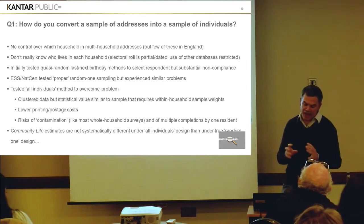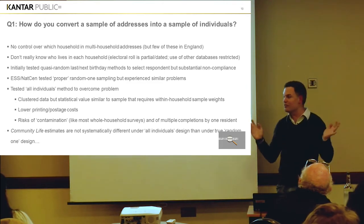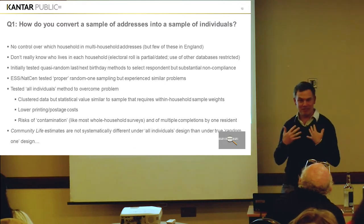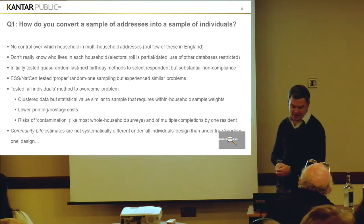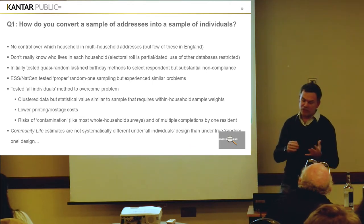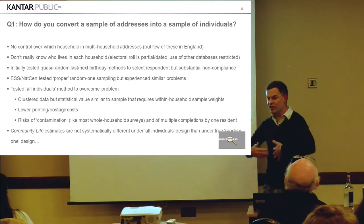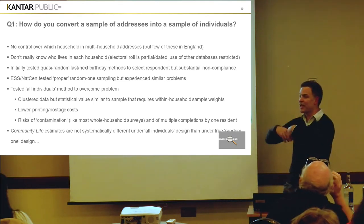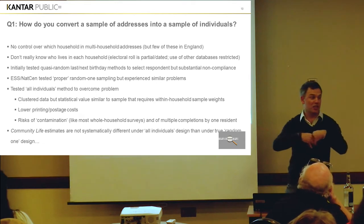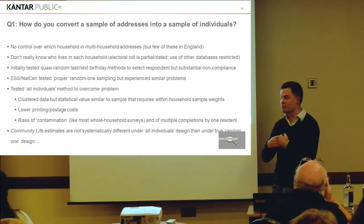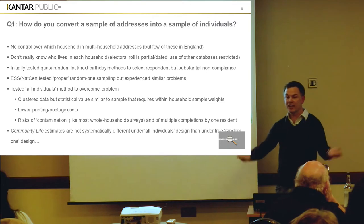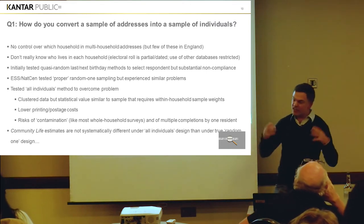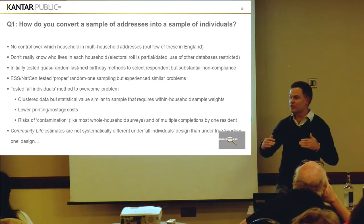So we moved on and said, why don't we just get rid of sampling within addresses and test the 'all individuals' methods — please everybody take part. This brings you, first of all, clustered data. It's an unclustered sample of addresses, but if more than one person responds in the household, then that data is clustered by household. And as we know, people who live in the same household are more like each other than a random pair picked from the population. So that tends to reduce the statistical value of the data. But when you actually look at it across lots and lots of variables, you find that the statistical reduction is quite similar to the statistical loss of value you get when you have to weight to compensate for randomly sampling one person in the household.